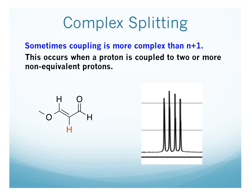So this is the proton highlighted here in red. Based on what we've already talked about, if we look at the adjacent carbons, we have an adjacent carbon here and an adjacent carbon here, and each of these contains one proton. So we would think we have those two protons — N equals 2, N plus 1 is 2 plus 1, or 3 — and we would expect a triplet.